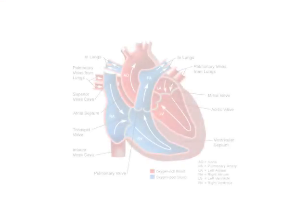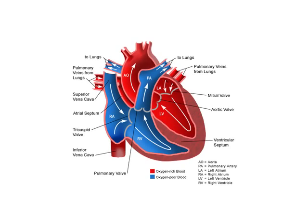Let us have a brief overview of right and left-sided cardiac failure. This is a picture of the cardiac blood flow dynamics. From all over the body, blood returns to the right atrium via the superior and inferior vena cava. And from the right atrium, it passes to the right ventricle, from where it is pumped via the pulmonary artery to the lungs for oxygenation.